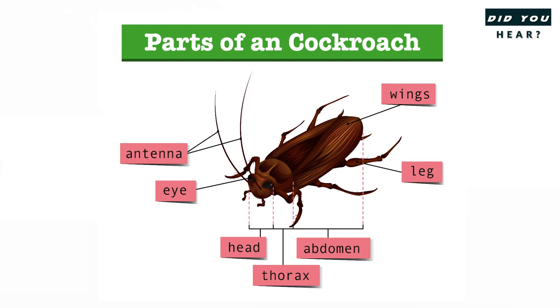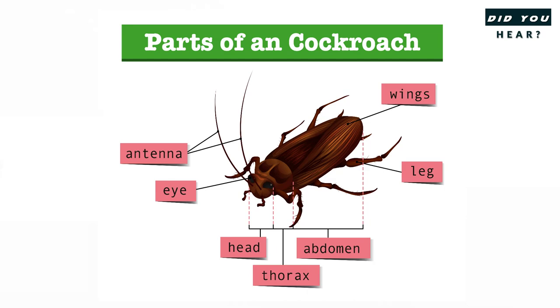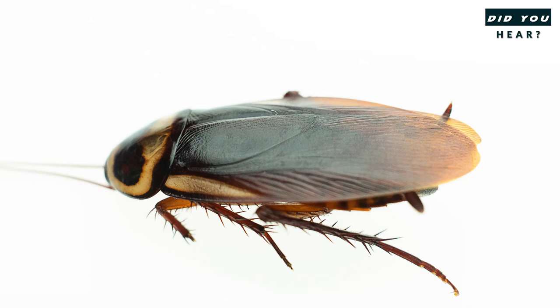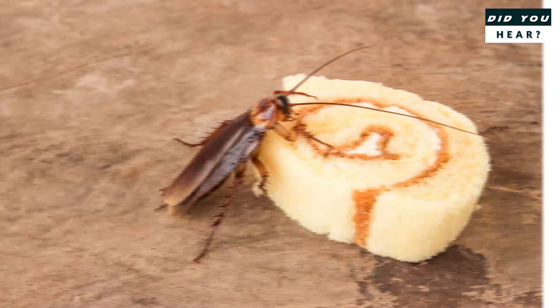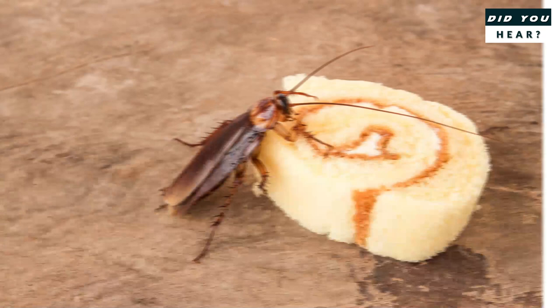Like other insects, the cockroach does not have lungs. Instead, its respiratory system consists primarily of a network of tubes called tracheae, that open at the surface of the thorax and abdomen through paired valve-like structures called spiracles. Muscles on or near the spiracles keep them closed most of the time but allow them to open as needed to take in oxygen-rich air and to release carbon dioxide-laden air as a waste product from the body.